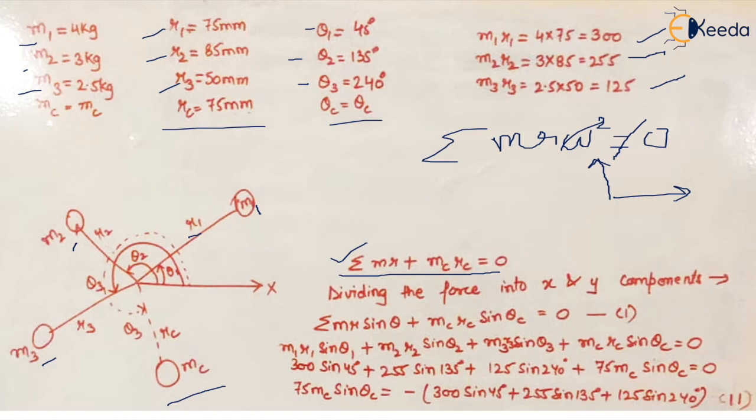Firstly we do it for the vertical components which says summation of mr sin theta plus mc rc sin theta c is equal to zero, and we break the summation so it becomes m1r1 sin theta 1 plus m2r2 sin theta 2 plus m3r3 sin theta 3 plus mc rc sin theta c equal to zero.